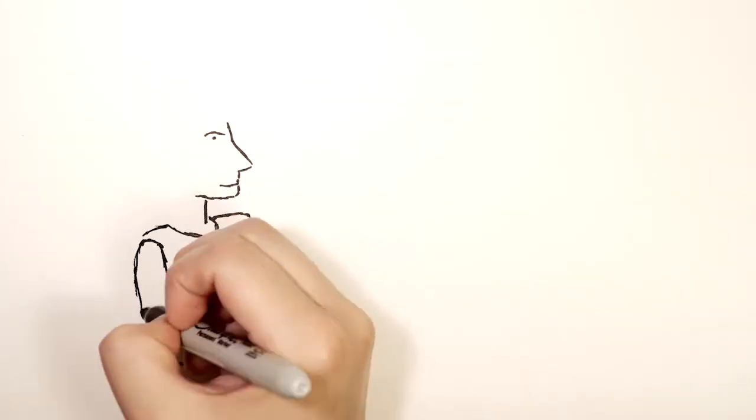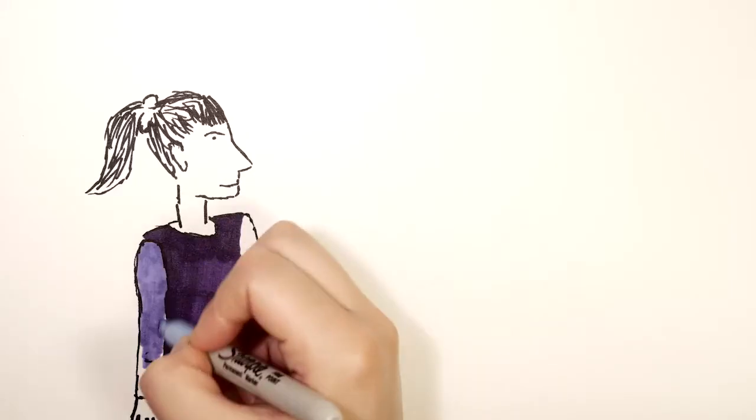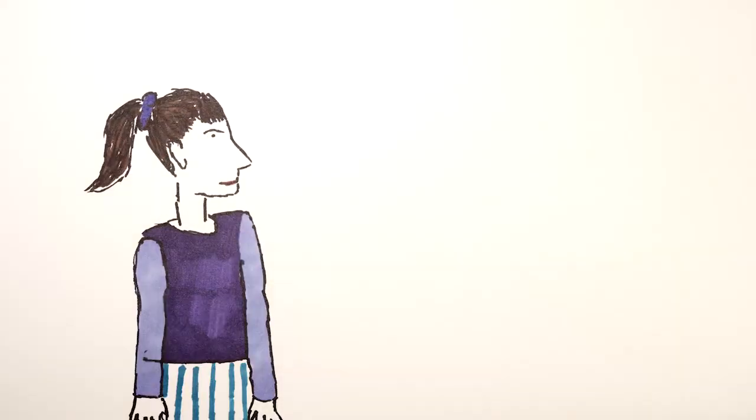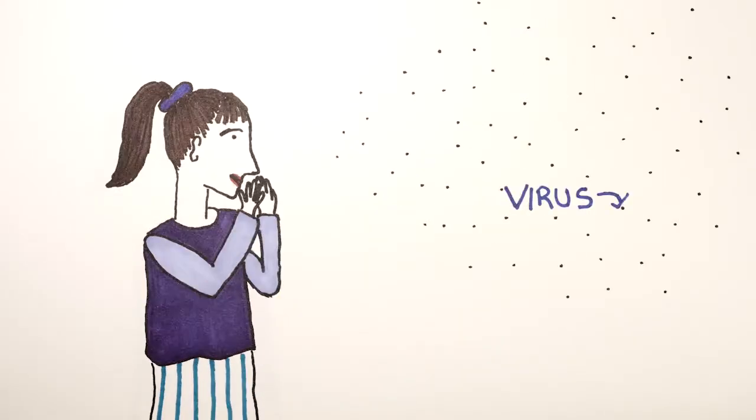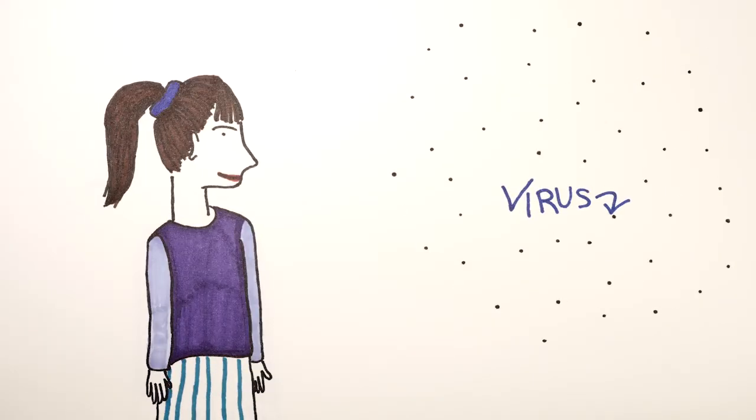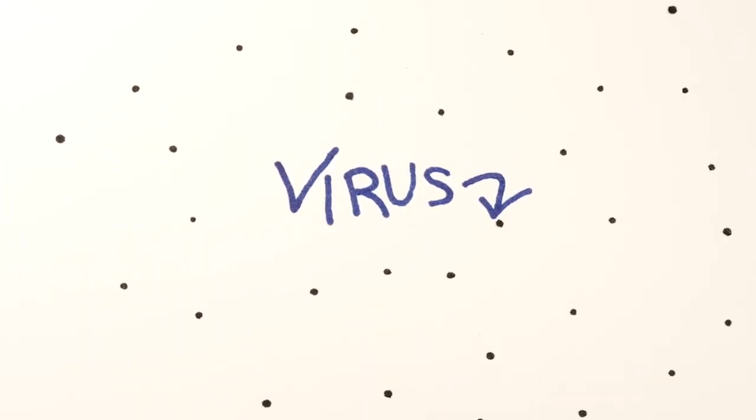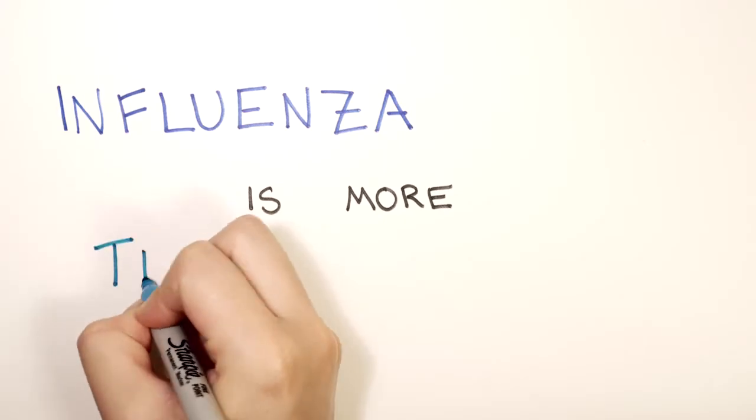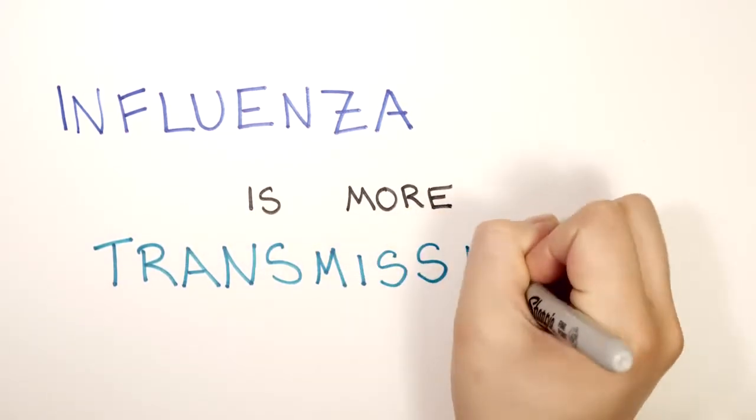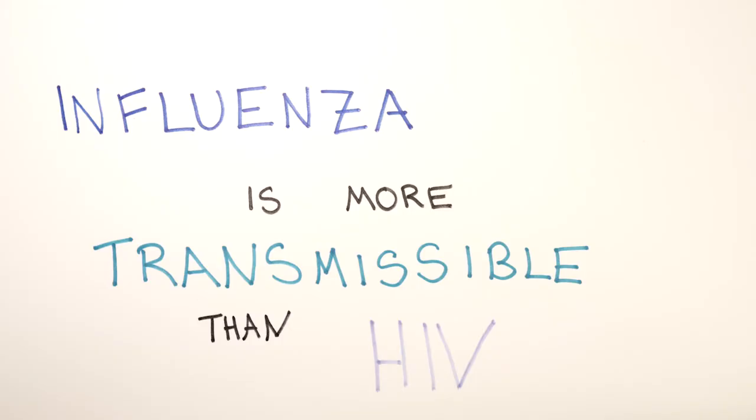In contrast, some diseases travel through the air, like the common cold or influenza. The virus is in a cloud of tiny invisible droplets. So if you breathe that air, you get infected. So influenza is more transmissible than HIV, which requires direct contact.